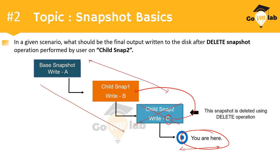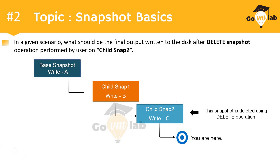If you understand how the snapshot chaining process works — how the snapshot parent CID relates to the child CID — you know that snapshots involve an entire chaining process where the child disk always derives data from its parent disk. Because the current state depends on child snap 2 as well, this data will be merged or written to child snap 1. Once successfully written, the snapshot will be deleted.